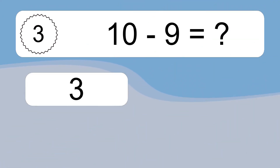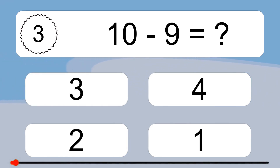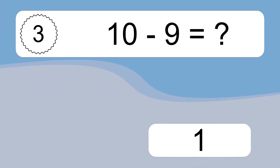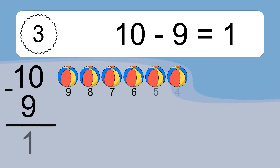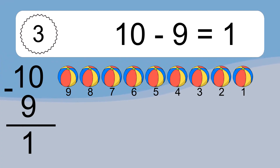10 minus 9 equals what? 10 minus 9 equals 1. Let's count it. 9, 8, 7, 6, 5, 4, 3, 2, 1.